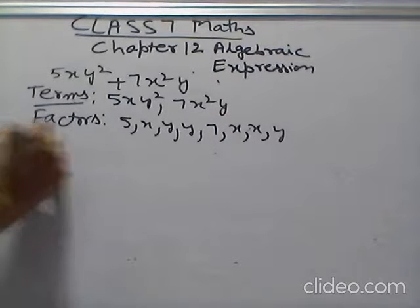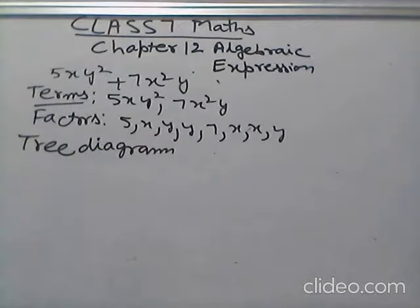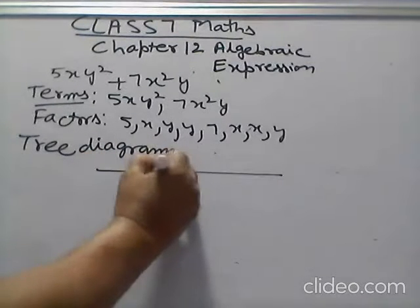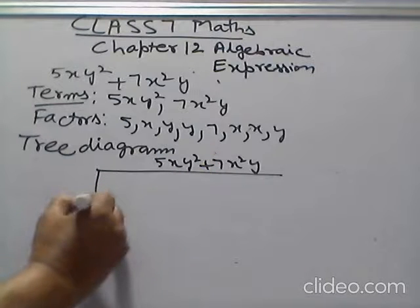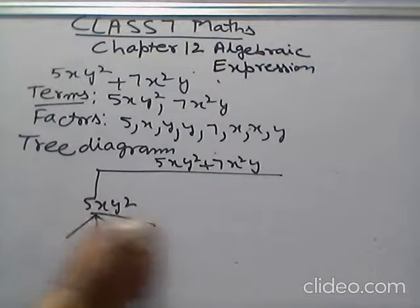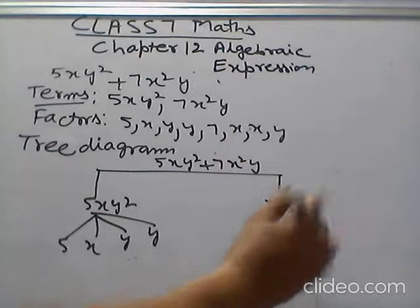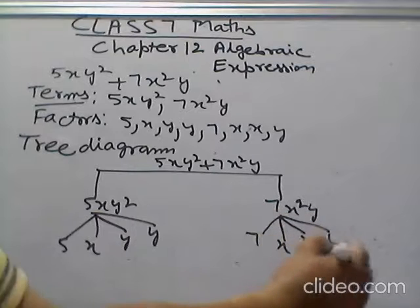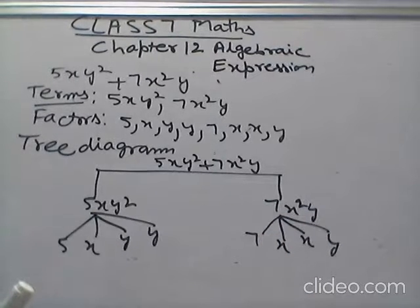Tree diagram. 5xy square plus 7x square y. 5xy square, 5xy y. 7x square y, 7x xy. 5xy y. Ok.